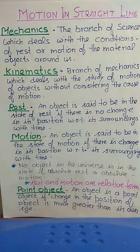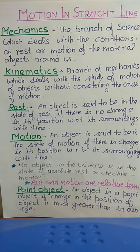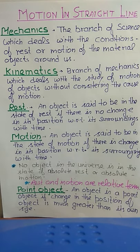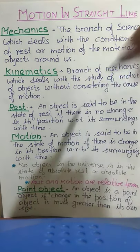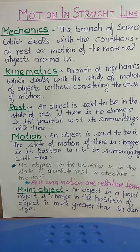On the basis of this, we can say that rest and motion are relative terms. Now I am going to discuss the point object. A point is very small.